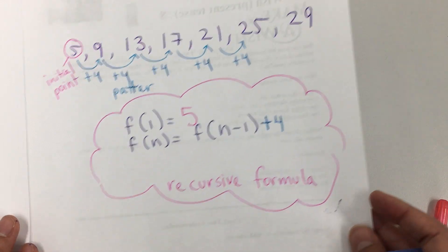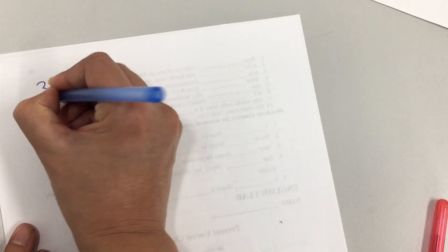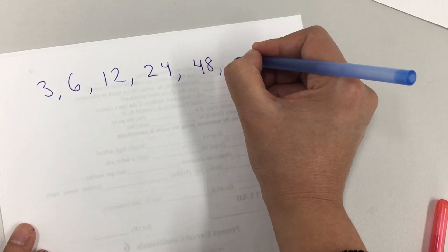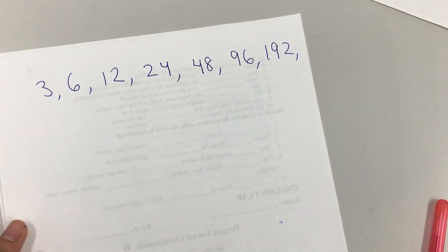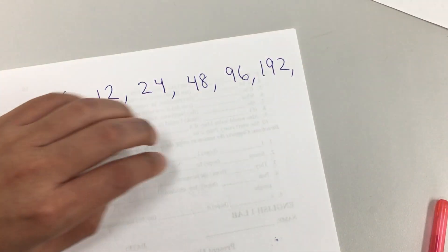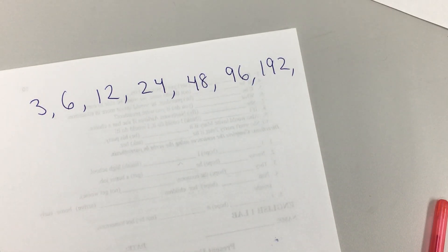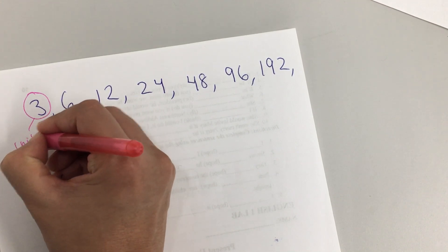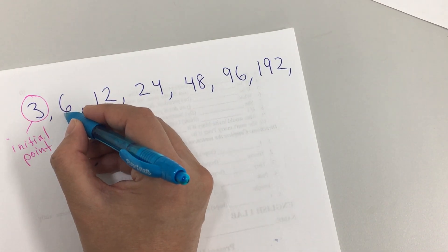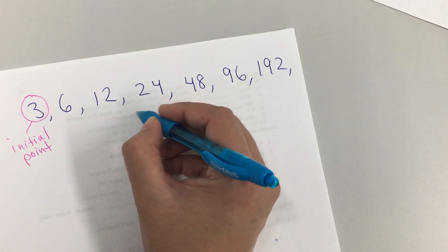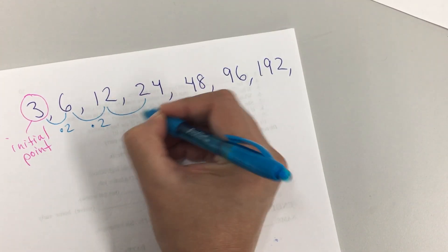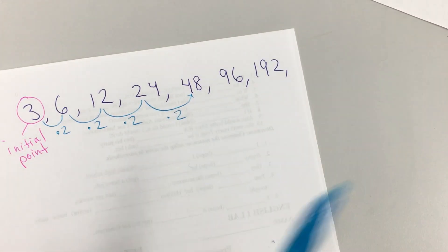Okay, this one. I'm going to start with 3, 6, 12, 24, 48, 96, 192. Again, which formula would help me to figure out the next terms? We need the initial point. We look for the pattern. Some people say plus 3, but then plus 3 is not 12, so something else is happening. Plus 3 is not 24. It looks like we're multiplying by 2 — times 2, times 2, times 2, times 2, times 2. So, that's my pattern.